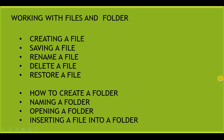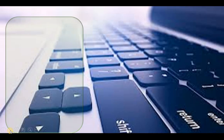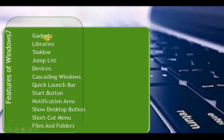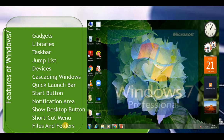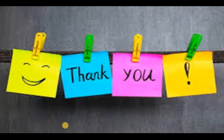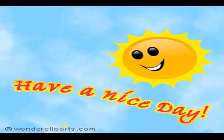Students, I hope you understood all the topics here very clearly. Today in the chapter we learnt about gadgets, libraries, taskbar, Jump List, devices, cascading windows, Quick Launch bar, Start button, notification area, Show Desktop button, shortcut menu, files and folders — all these were the features of Windows 7. I hope you will revise all what I taught you. Thank you so much, have a nice day, bye bye, take care.